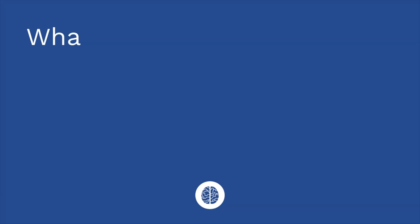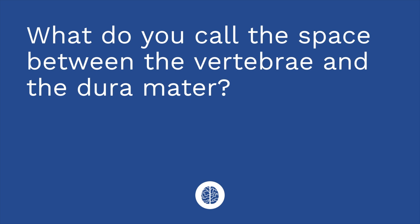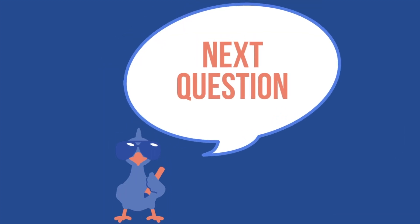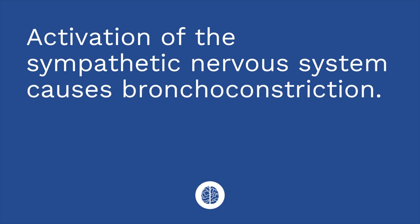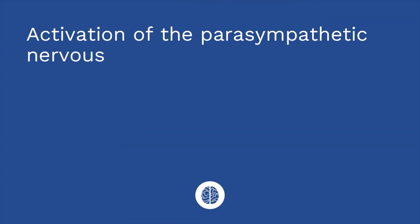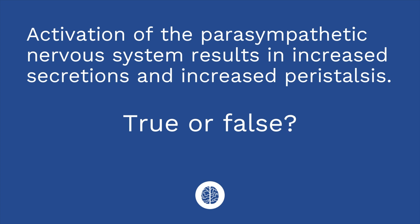It's time for a quiz — three questions. First: what do you call the space between the vertebrae and the dura mater? The answer is the epidural space. Question two: activation of the sympathetic nervous system causes bronchoconstriction — true or false? The answer is false; it causes bronchodilation. Question three: activation of the parasympathetic nervous system results in increased secretions and increased peristalsis — true or false? The answer is true.